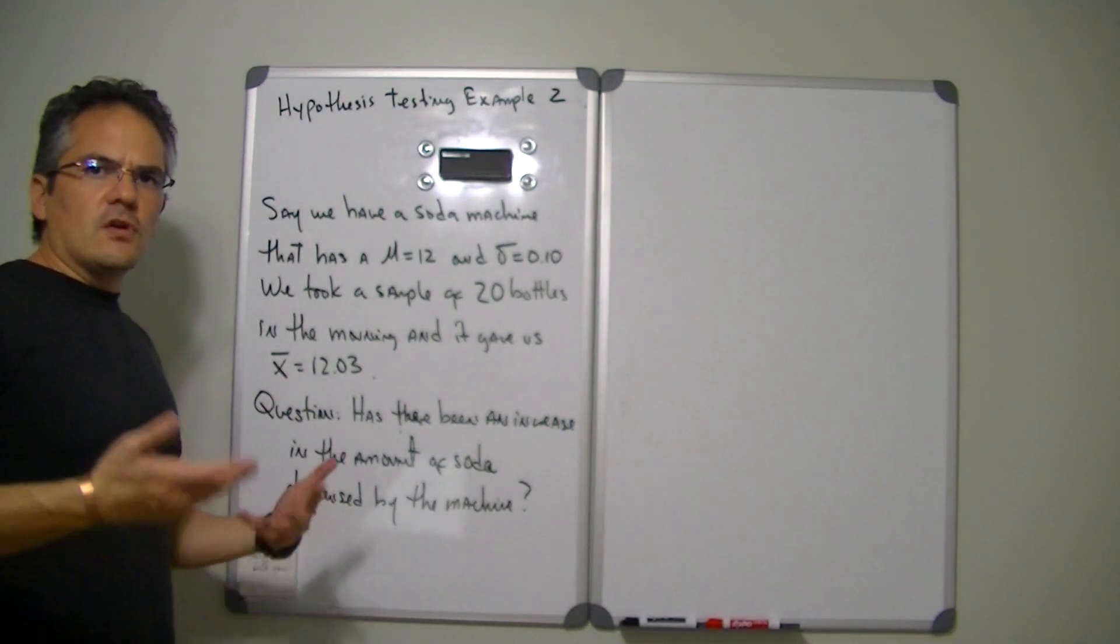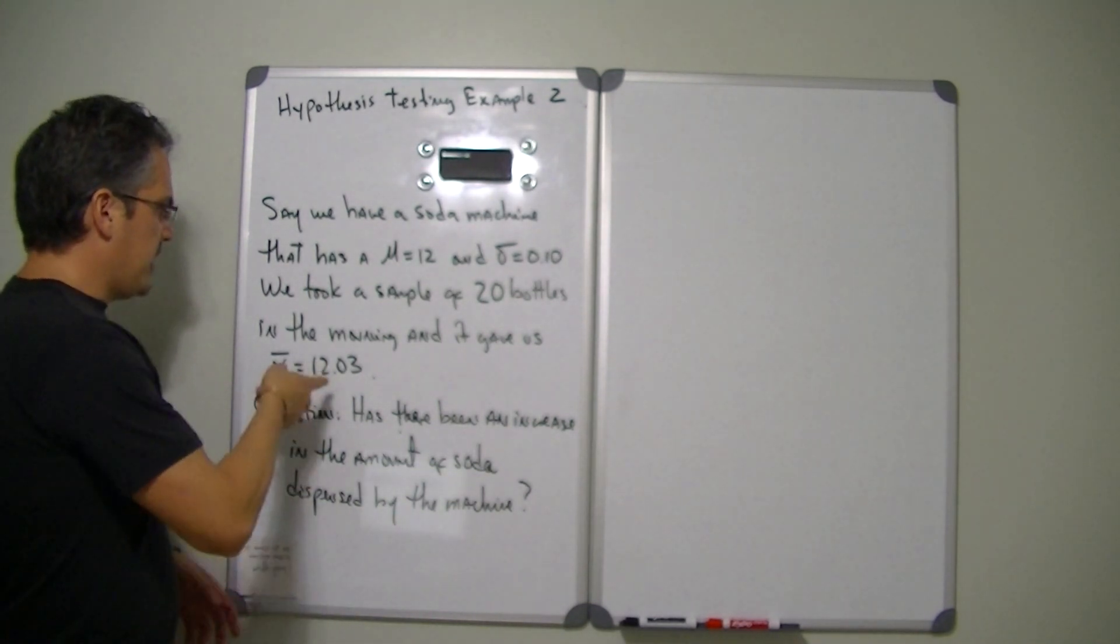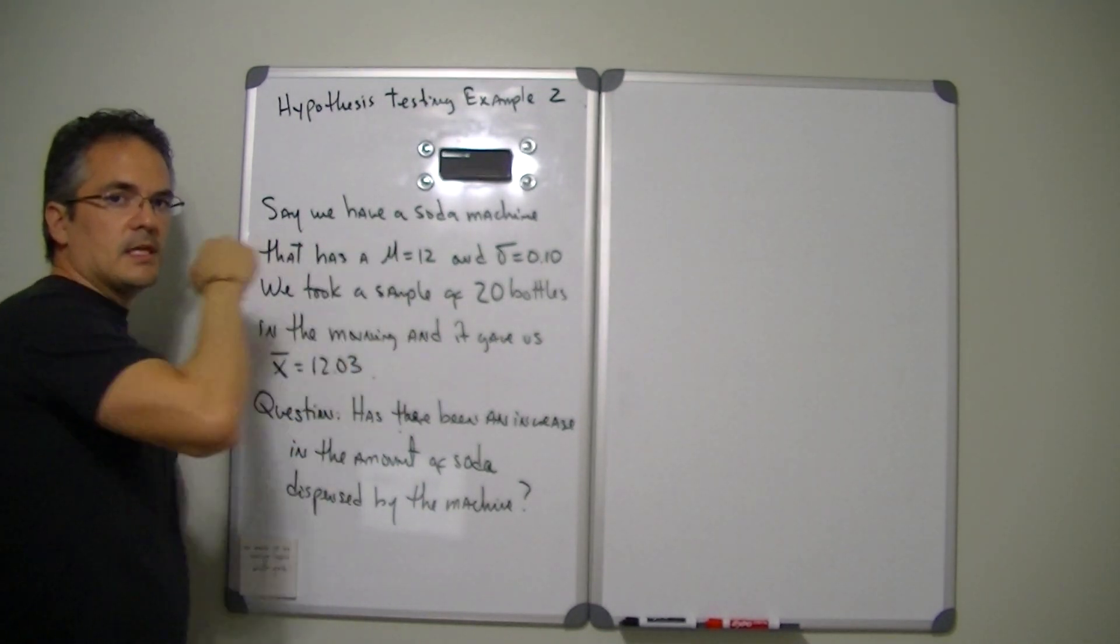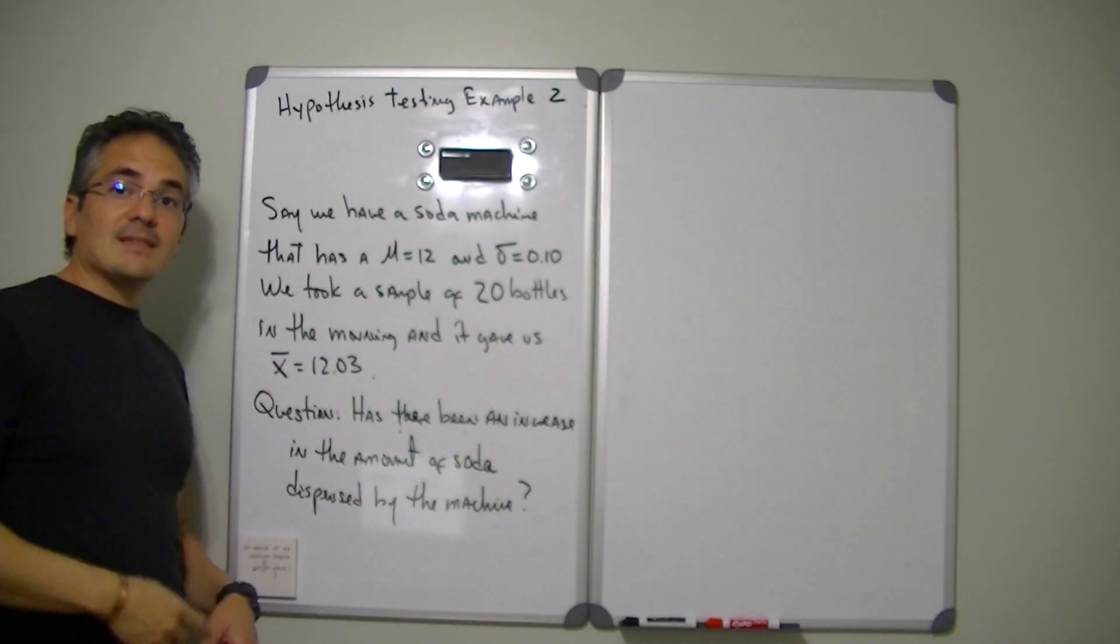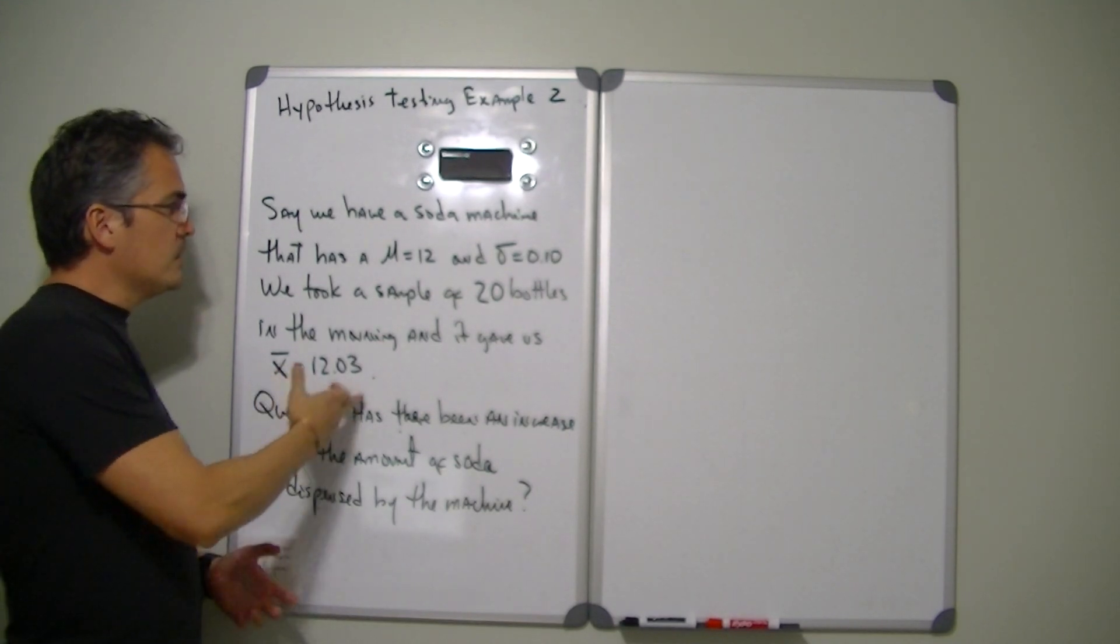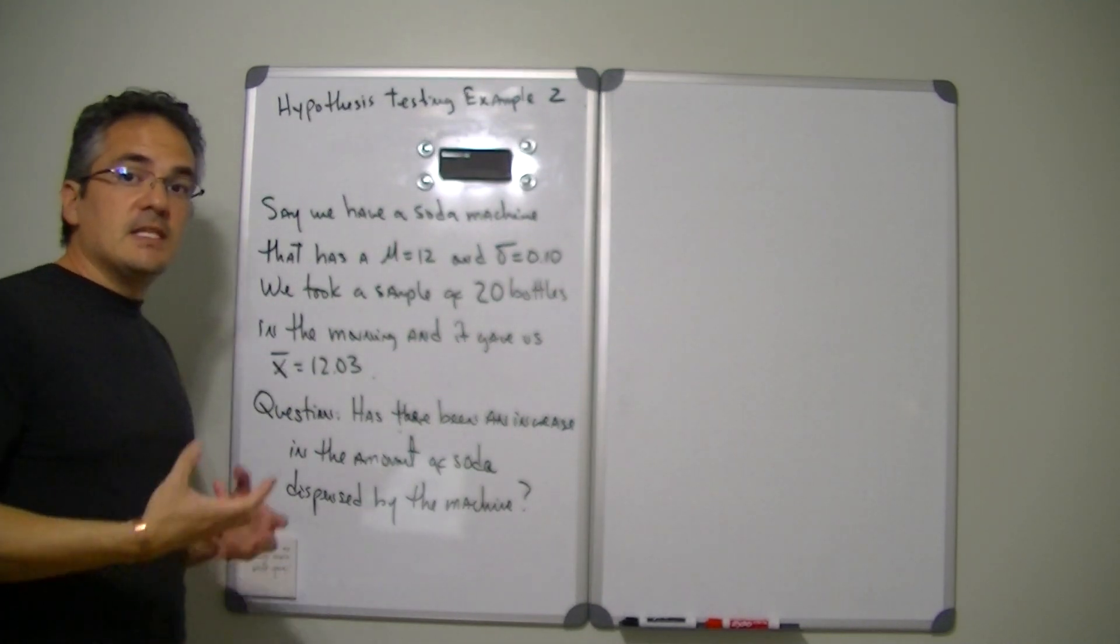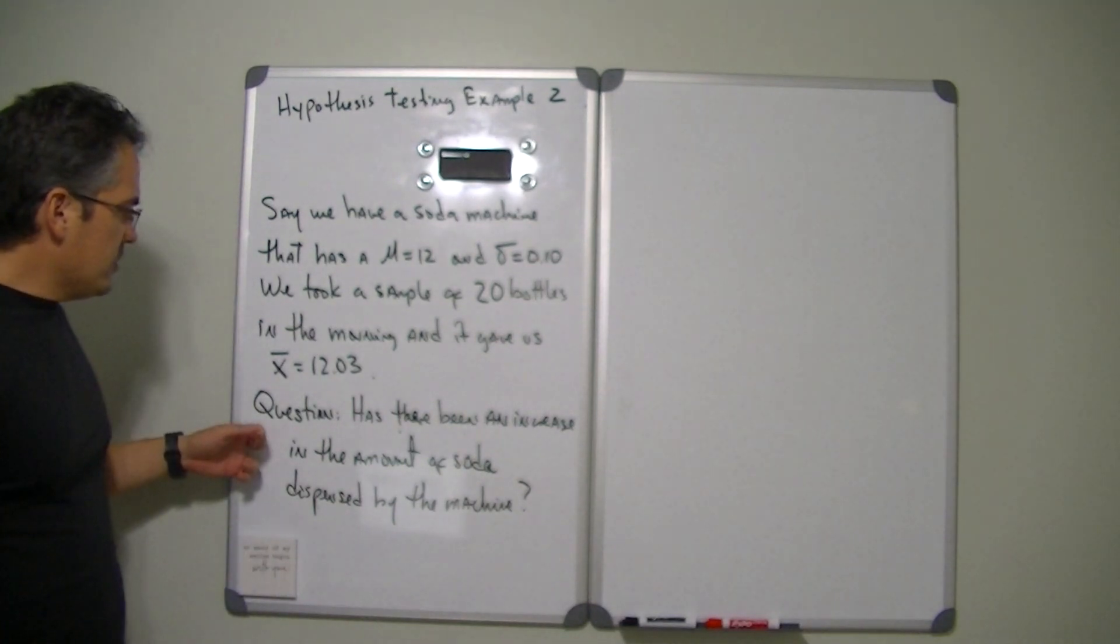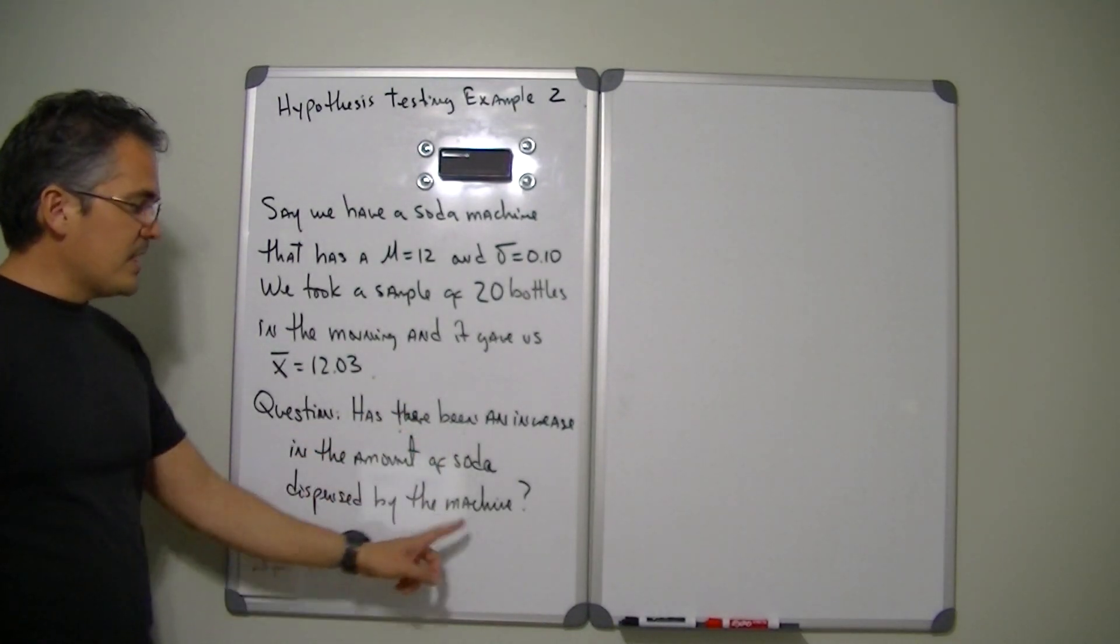So hypothesis testing is sort of like asking yourself a question of is the machine broken since my mean is higher than my population number. Now it is very normal for the mean to be different than the population number, as a matter of fact that's expected, but the question is is it significantly higher than it should be? So the question that we have for ourselves is has there been an increase in the amount of soda dispensed by the machine?